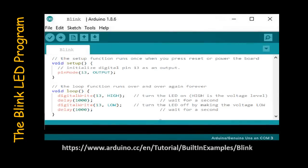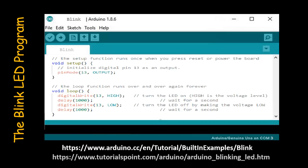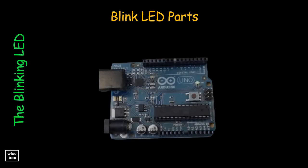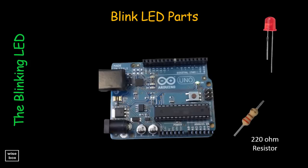You may download the Blink LED Program from the link provided at the bottom. Here's what we need: the Arduino Uno board, an LED bulb, 220 ohm resistor, and the Blink LED Program uploaded successfully.